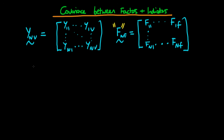What we're interested in deriving is the covariance between the indicator scores and the factor scores. It's worthwhile thinking about the dimensions of what we want to get out. There are v indicator variables and f factor variables, so a matrix which is v by f would make sense for representing the covariance matrix between the indicator scores and the factor scores.